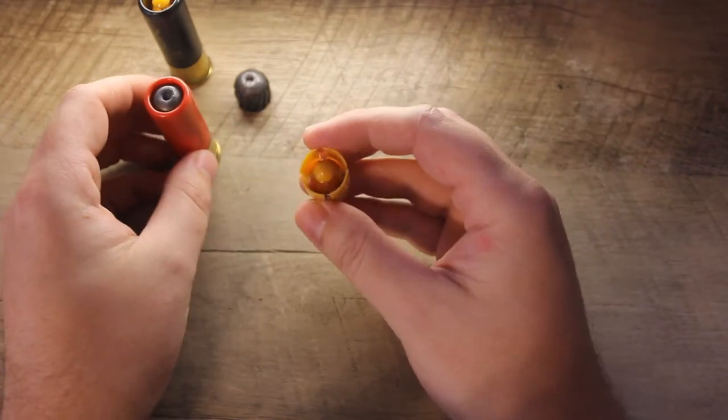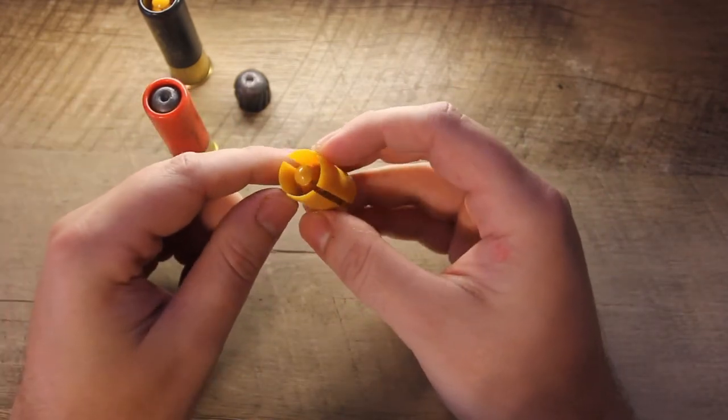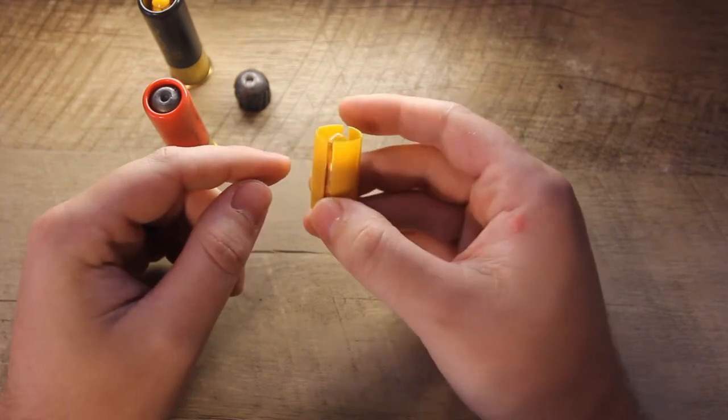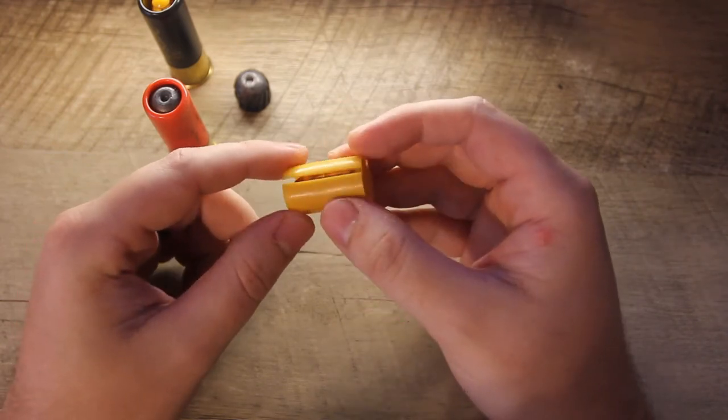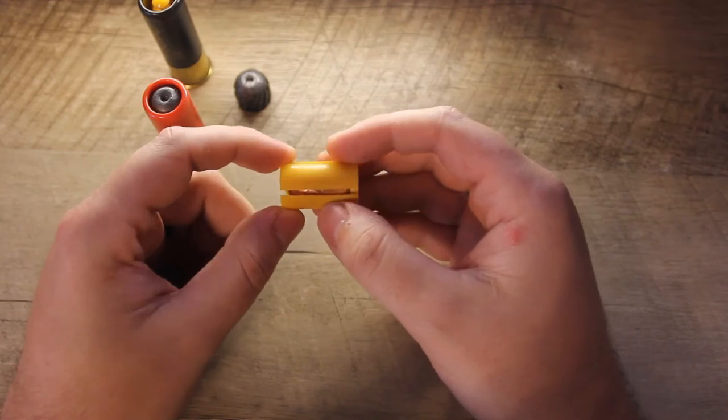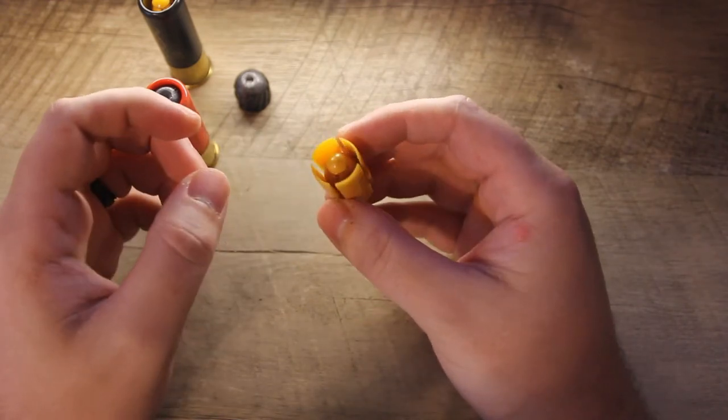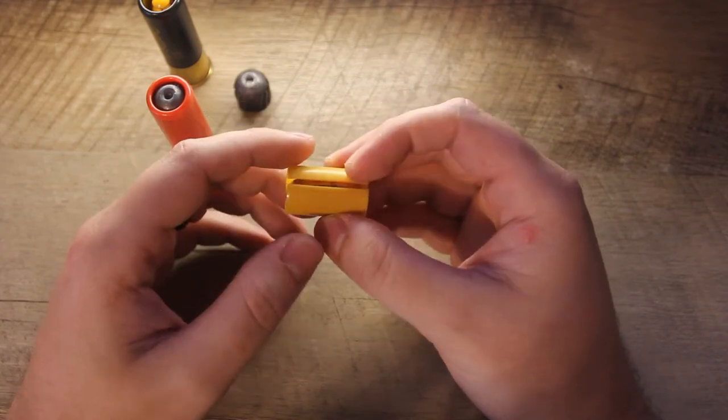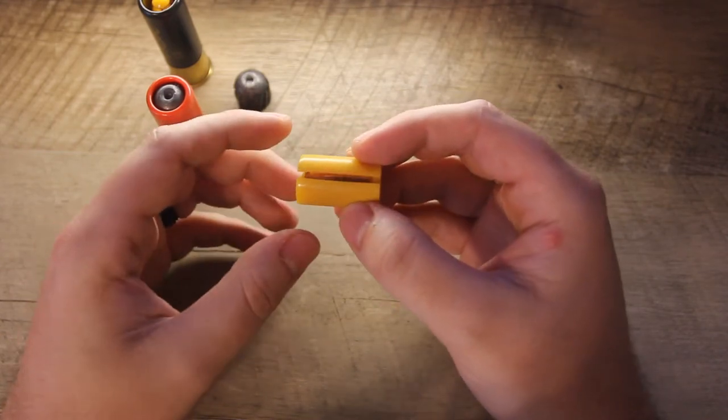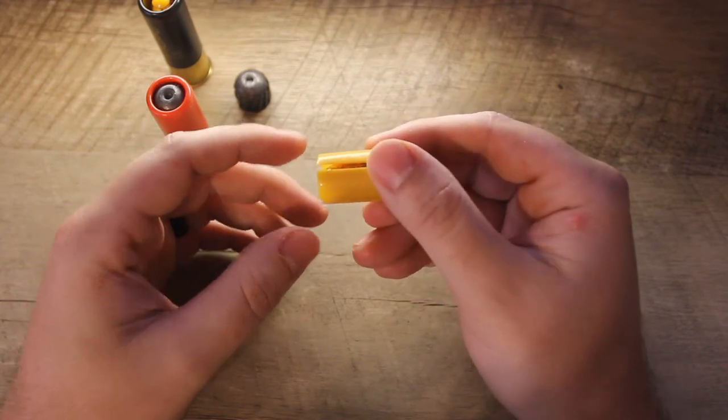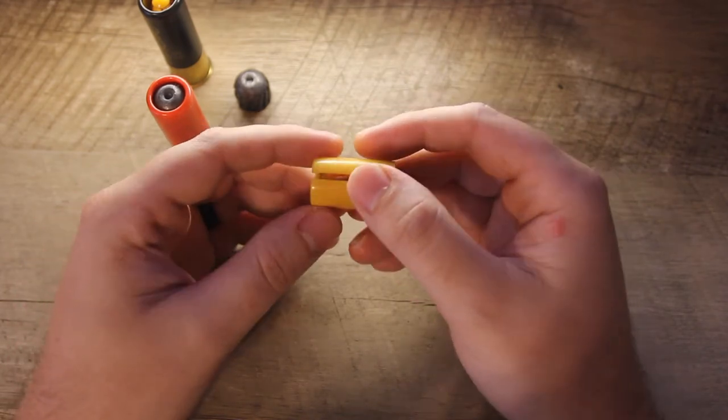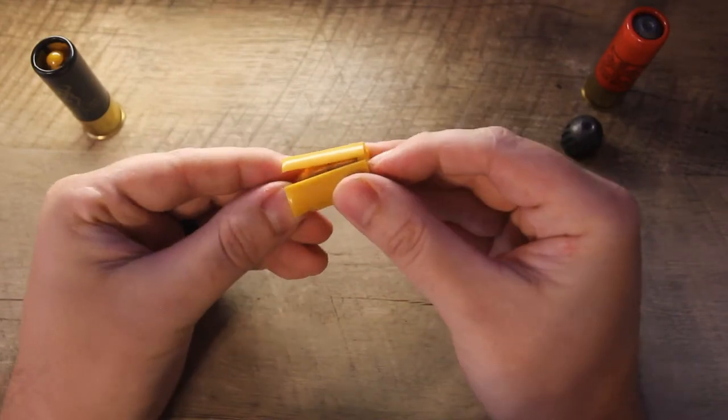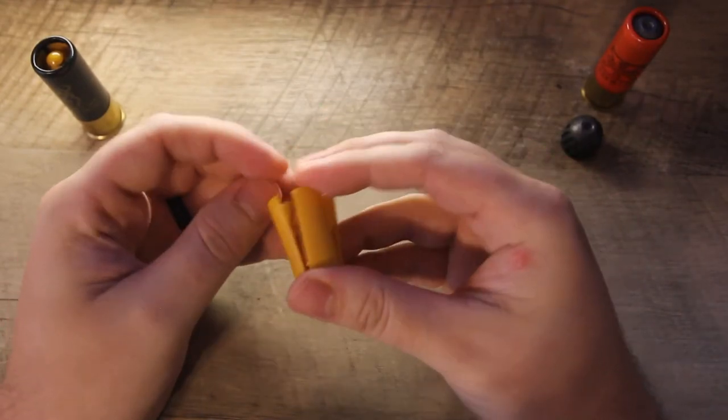Sabot slugs are essentially fitted inside this small plastic cylinder that surrounds the projectile. You can sort of view it kind of like the wad in a traditional shotgun shell. When this projectile is fired from a shotgun, the rifling in the barrel essentially causes the plastic container to begin to spin.